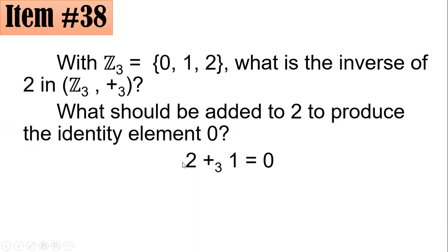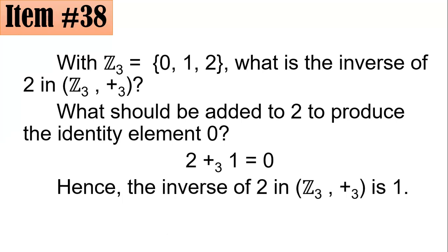This is the concept, in fact, the abstract concept of the inverse is what element should be operated with it so that you will arrive to the identity element. So if you could see, if you add 2 by 1, 2 plus 1, that's 3, right? But you still have to divide it when you're modulo, which is 3. So 2 plus 1 is 3. 3 divided by 3, the remainder is 0. Hence, the inverse of 2 in the group Z₃ under addition modulo 3 is the element 1, letter B.